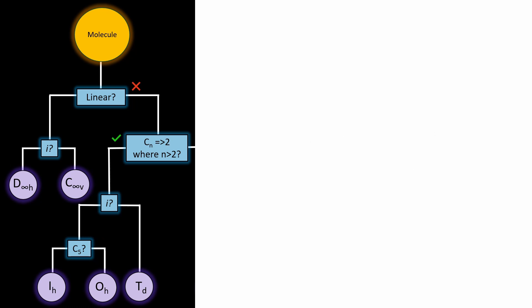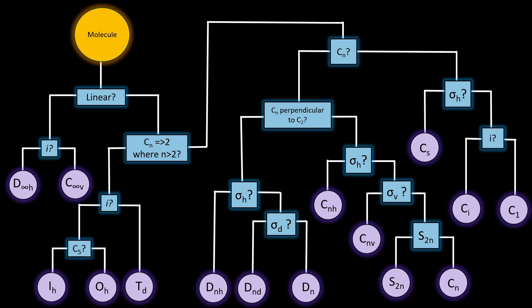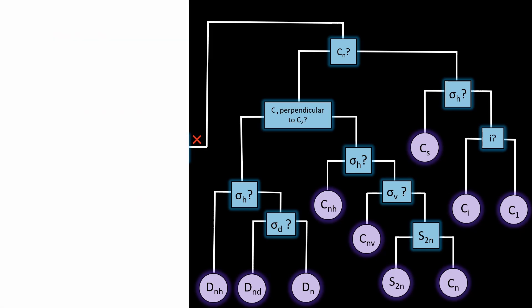If there is no inversion center, we have Td, for example methane. Going back now, if it has multiple rotation axes higher than C2, does it have a single proper rotation axis? If yes, and it has another Cn axis perpendicular to C2 axis, it's in the dihedral or D groups. If it has a horizontal mirror plane, it's DnH, for example benzene.